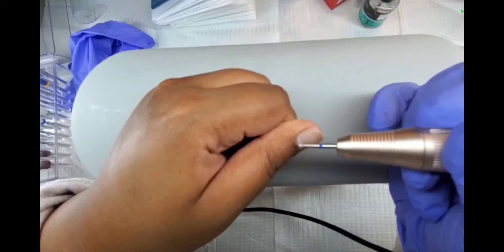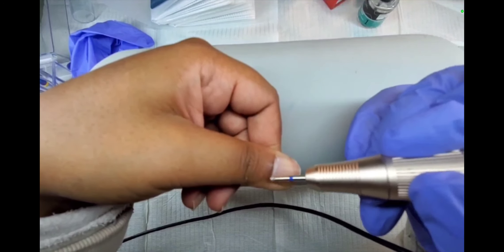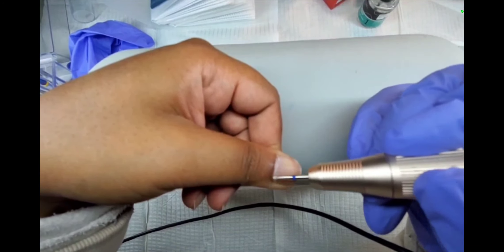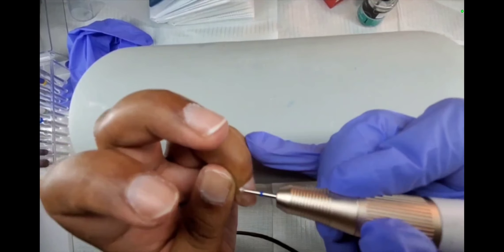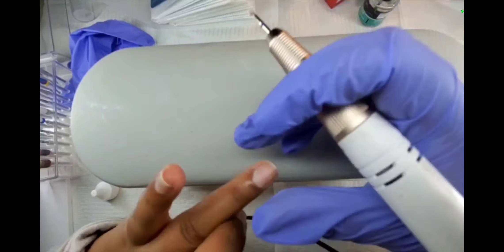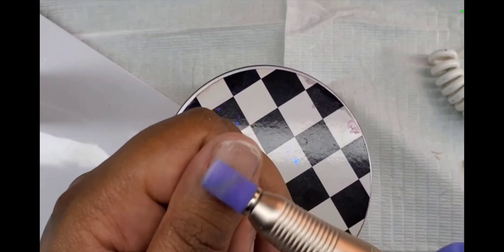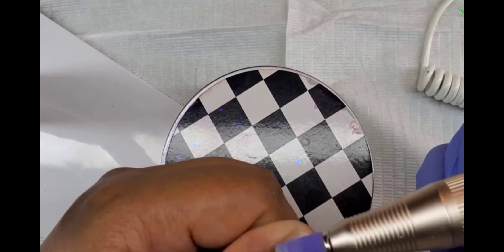Once it's all dried up I do go ahead and use this cuticle bit. I don't know why it's still so blurry. I'm just going to go ahead and clean up around the cuticles. It's also cleaning up whatever glue was left over from the previous set.